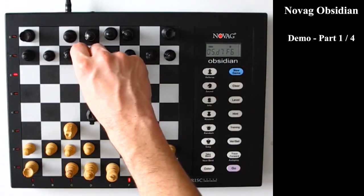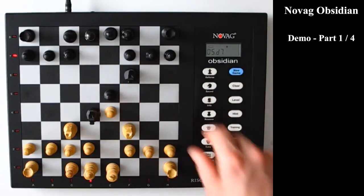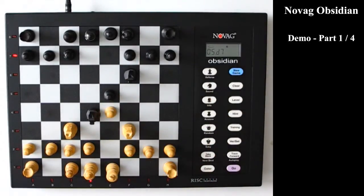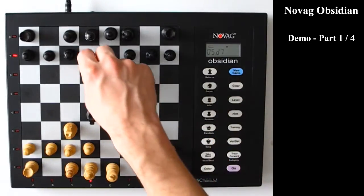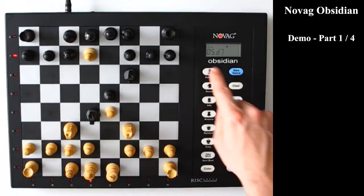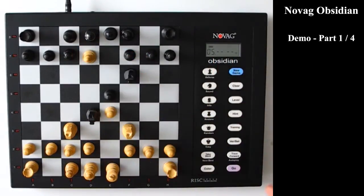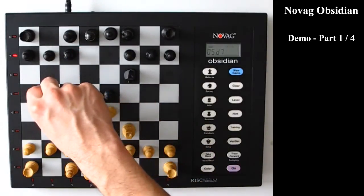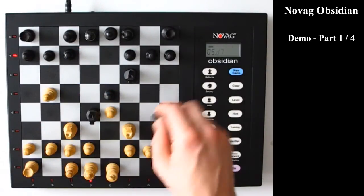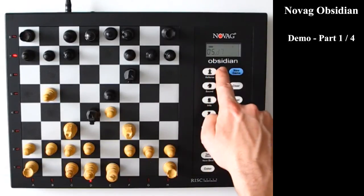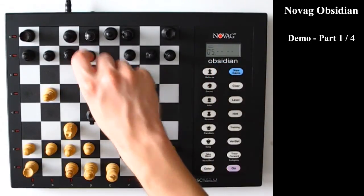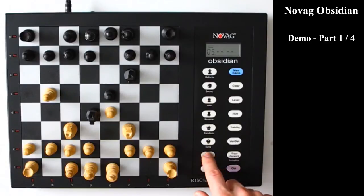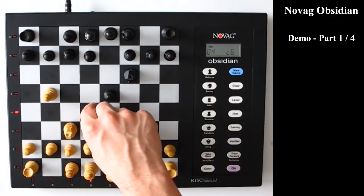First the computer will take back its move. It will also indicate that I have to put back the bishop that it just took on this position. It also says that in the LCD screen. I'll take back once more to take back my silly move as well. And then I have to put back the black pawn on D7. I can take back one more move or several more moves if I like.